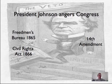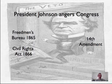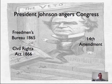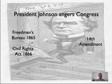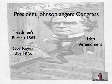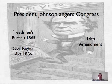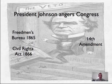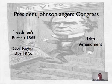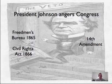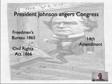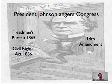President Johnson angered Congress through his vetoes of Reconstruction efforts. The Republicans wanted to renew the Freedmen's Bureau; Johnson vetoed it. In 1866, when they passed the Civil Rights Act — which would have given citizenship and full rights to all people born in the United States, including African Americans — he vetoed that as well. For the first time in U.S. history, Congress overrode Johnson's veto, thanks to the large Republican majority. Johnson vetoed the Freedmen's Bureau again when Congress re-passed it, and again his veto was overridden.